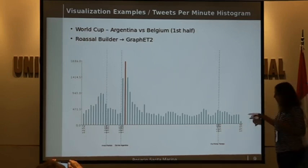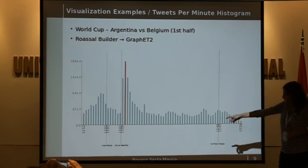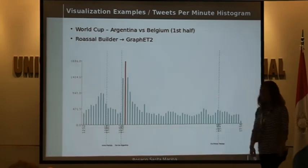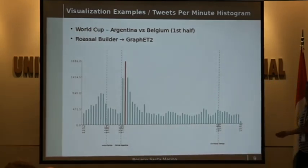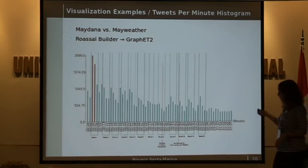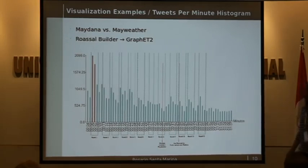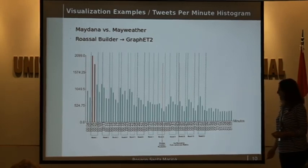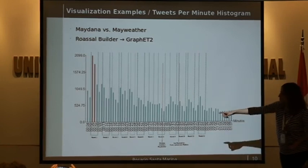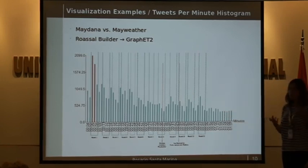The important thing in this chart is that when Argentina scored a goal in this minute, a lot of Twitter activity occurs. Here is another example where we analyze a boxing match. In this case, more Twitter activity appears in the first round, but it's not related to any particular event.